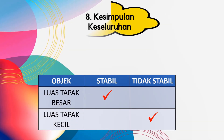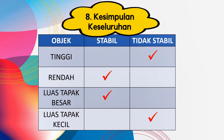Kesimpulannya secara keseluruhan daripada eksperimen satu dan eksperimen kedua, objek yang stabil mestilah rendah dan mempunyai luas tapak yang besar, manakala objek yang tidak stabil adalah tinggi dan luas tapaknya kecil.